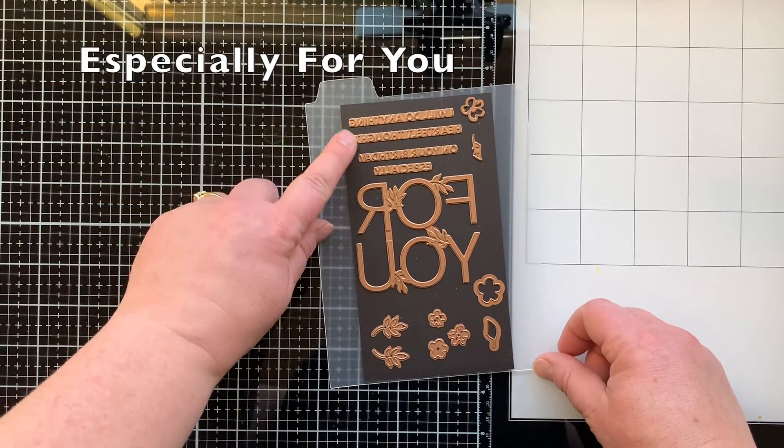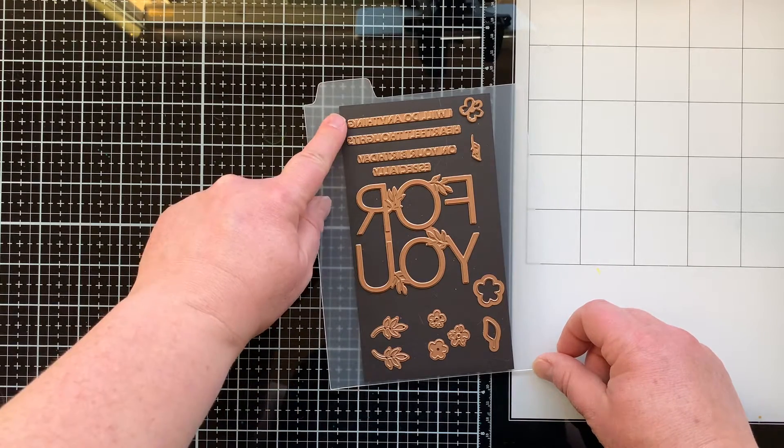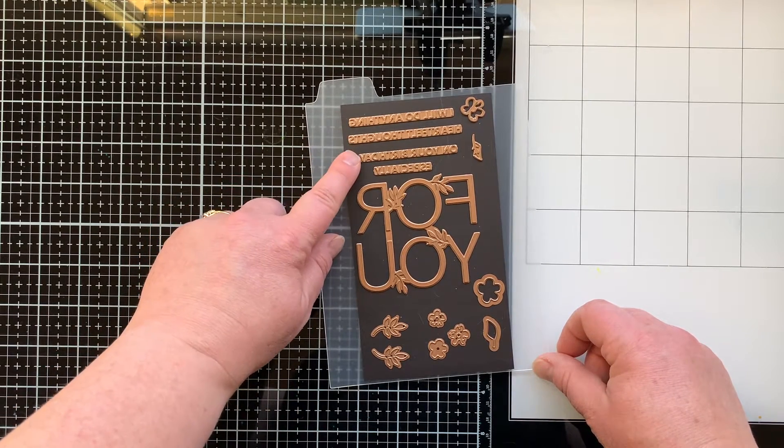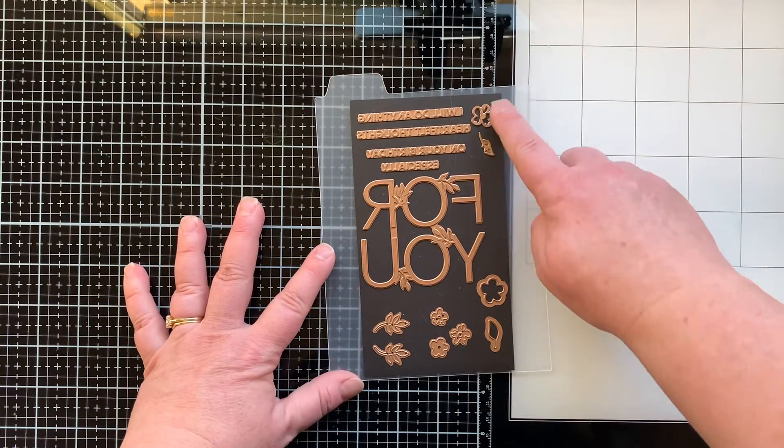Here is the set. It has four different sentiments that go with the largest for you. It says I will do anything, heartfelt thoughts, on your birthday, and especially. They all go with for you.